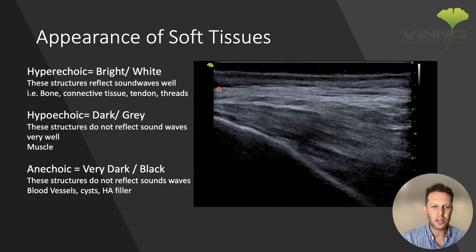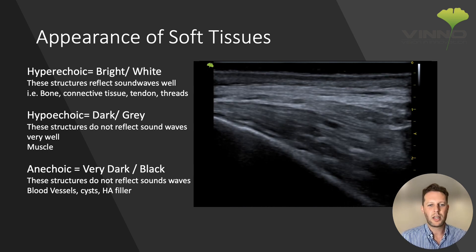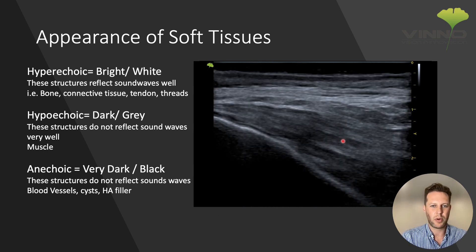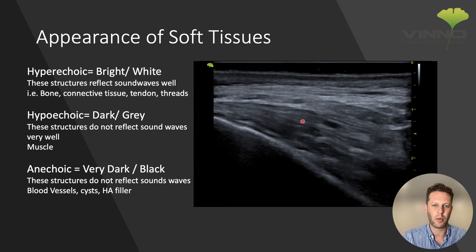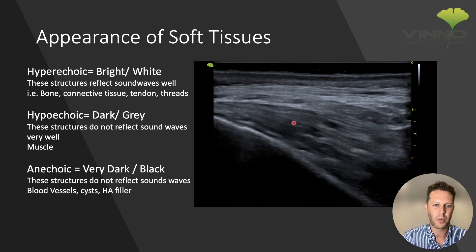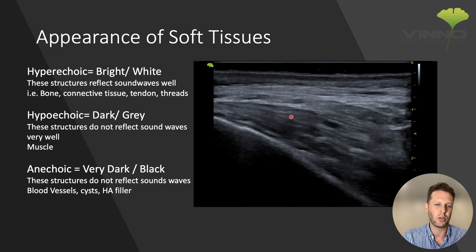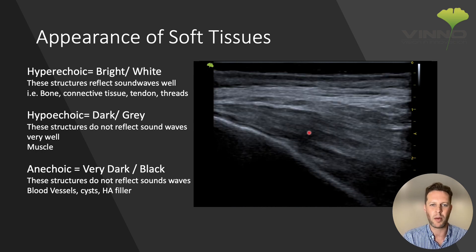This is the superficial temporal fascia and we can see the layers of the temporal fascia, including the deeper temporal fascia. Right at the top of the screen we also have the skin, which is also reflective of sound. If we play this video we can see a structure moving towards the bottom of the image — this is the temporalis muscle, and we can see that it is darker than the surrounding structures. We call this hypoechoic. It's not completely black, which would be anechoic; it's hypoechoic, and muscle is a really good example of a hypoechoic structure.